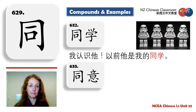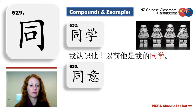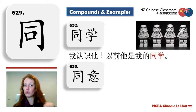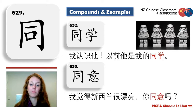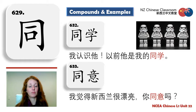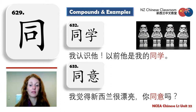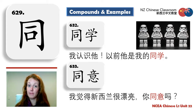同意 — to agree. 我同意 — I agree. What's disagree? 不同意. Example: 我觉得新西兰很漂亮，你同意吗? — I think New Zealand is very beautiful. Do you agree?